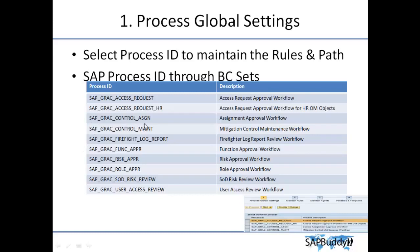The next one is GRAC Control Assignment. This is for mitigation control assignment — whenever you find any risk and want to assign a mitigation control, this will be the workflow that triggers all the respective processes. This is to maintain mitigation controls, and all workflows you would like to trigger during that maintenance will be maintained here. The next one is Firefighter Log Report.